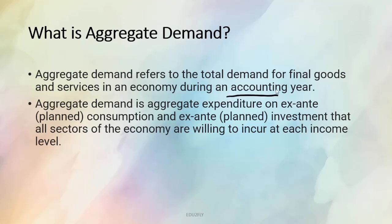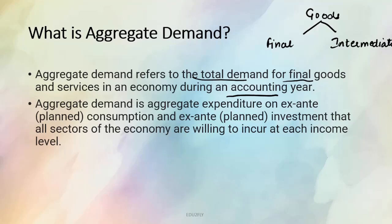Ek accounting year mein kitni total demand hoti hai final goods ki, woh dikhata hai aggregate demand. National income mein humne do type ke goods padhe — one was the final goods and other intermediate goods. Yahaan pe agar hum aggregate demand ki baat kerte hai toh hum sirf or sirf final goods ko consideration mein lete hai, aur ek accounting year ki baat kerte hai — accounting year hota hai from 1st April to 31st March. Ek accounting year mein kitni total demand hai, that is aggregate demand.